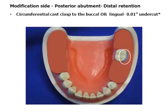Distal retention on the molar may be provided by a cast clasp engaging 0.01 inch undercut. If the retention is on the mesial, a modified T or ring clasp may be considered. Reciprocation is provided with cast circumferential clasping or lingual plating.